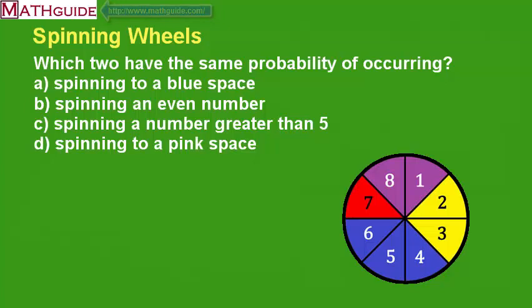Which two have the same probability of occurring? A, spinning to a blue space. B, spinning an even number. C, spinning a number greater than five, or D, spinning to a pink space.